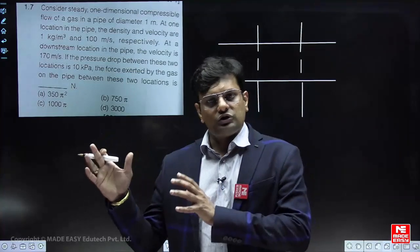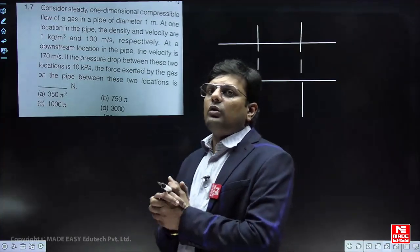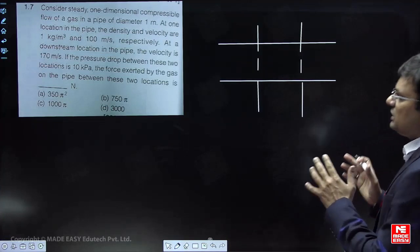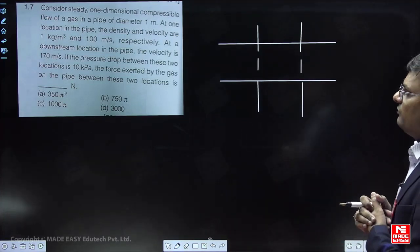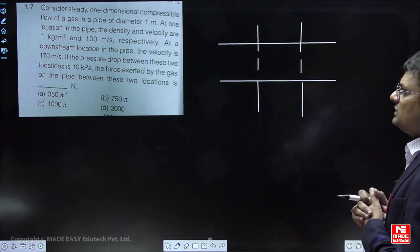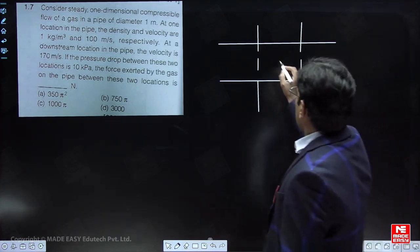Flow taken place through a constant area duct. Now this question is based on this concept. So consider a steady one-dimensional compressible flow of a gas in a pipe of diameter one meter.